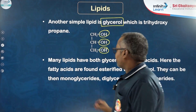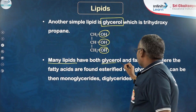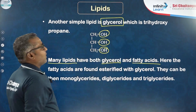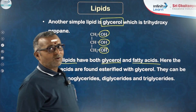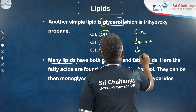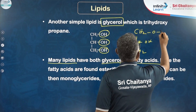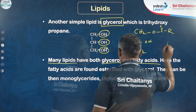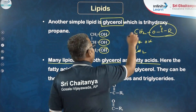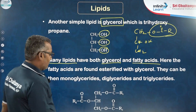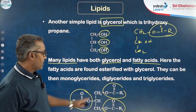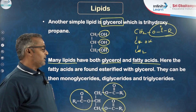Many lipids have both glycerol and fatty acids together. In such cases, the fatty acid is esterified to the glycerol. If one fatty acid is esterified, it is called monoglyceride; if two, diglyceride; if three fatty acids are esterified, triglyceride.